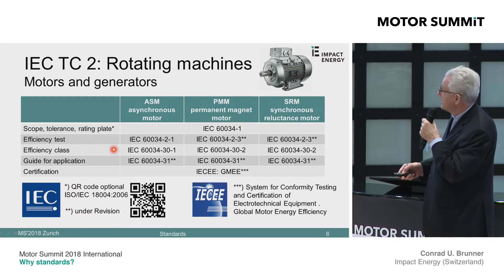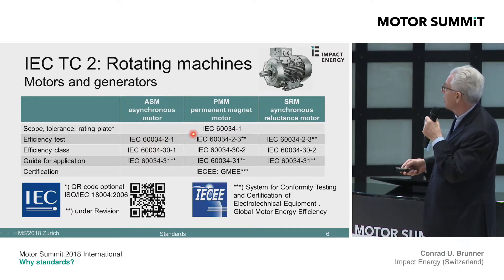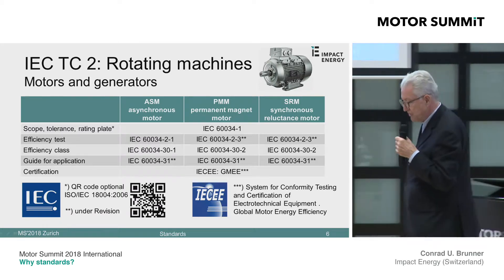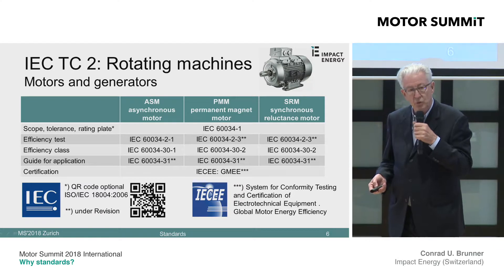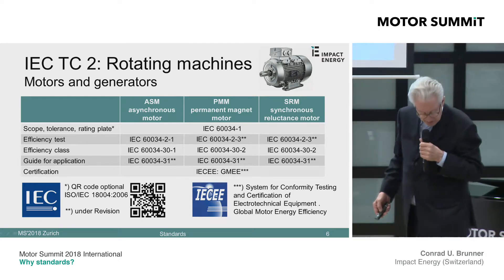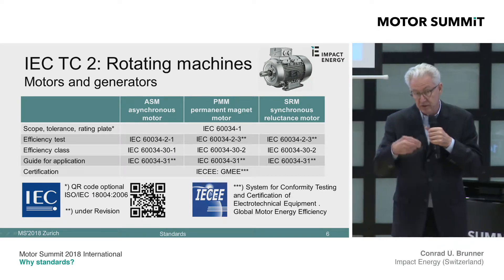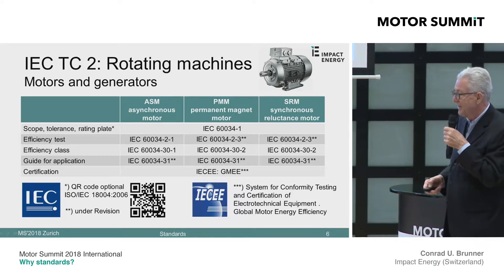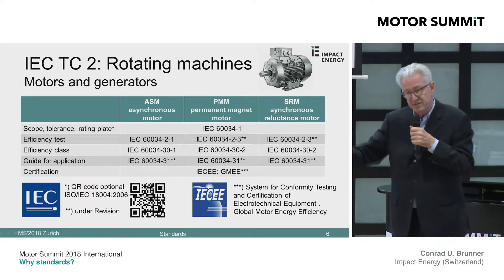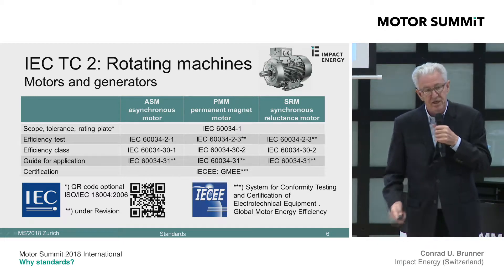Then we have the testing standard, efficiency testing 60034-2-1. It has a brother or sister, 60034-2-3, which is used for motors running on a variable speed drive. This is currently under revision. This new standard for variable speed driven motors — converter motors as it's called — is much more recent. That means it will go through many revisions until everybody from Australia to China, to Europe, to Japan, to the USA will agree on it. I can tell you this maturation and harmonization process within one technical committee is already a big job.